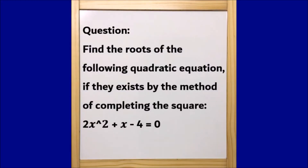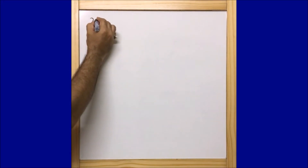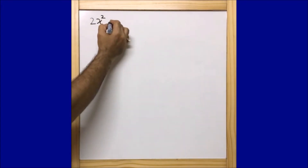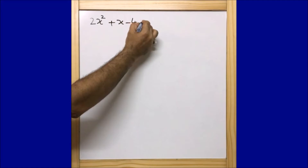The given question is: find the root of the following quadratic equation if they exist by the method of completing the square. The given equation is 2x² + x - 4 = 0. Let me write down the question on the board.